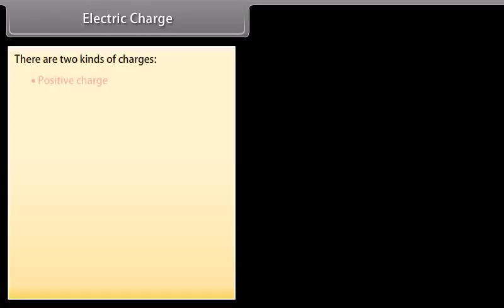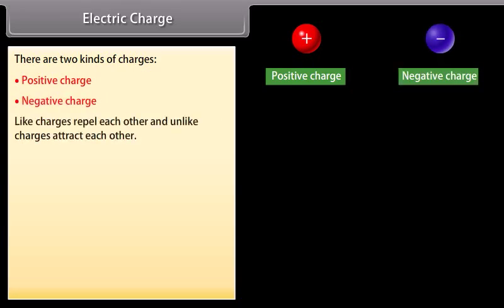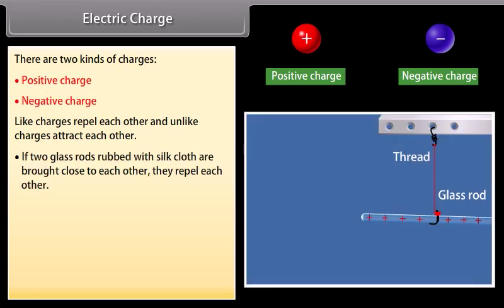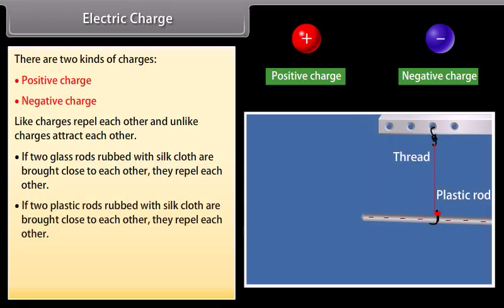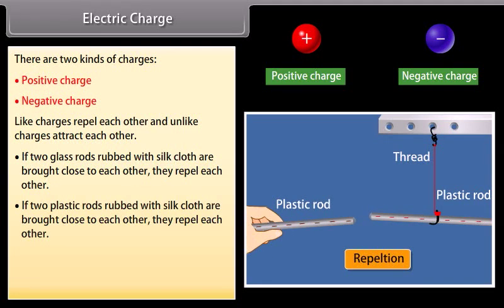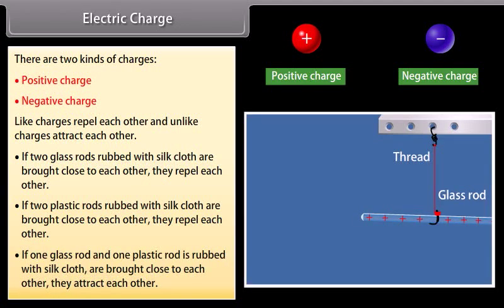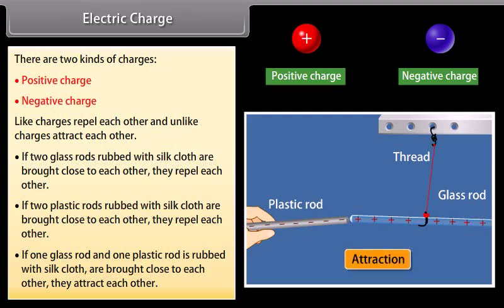Electric charge: There are two kinds of charges — positive charge and negative charge. Like charges repel each other and unlike charges attract each other. If two glass rods rubbed with silk cloth are brought close to each other, they repel each other. If two plastic rods rubbed with silk cloth are brought close to each other, they also repel each other. If one glass rod and one plastic rod rubbed with silk cloth are brought close to each other, they attract each other.